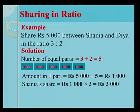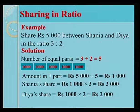We now find Shania's share. By multiplying 1,000 by 3 to obtain 3,000 rupees. Dia's share is obtained by multiplying 1,000 by 2 to obtain 2,000 rupees.